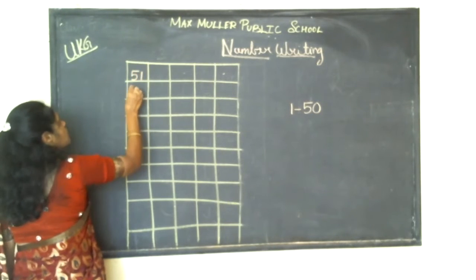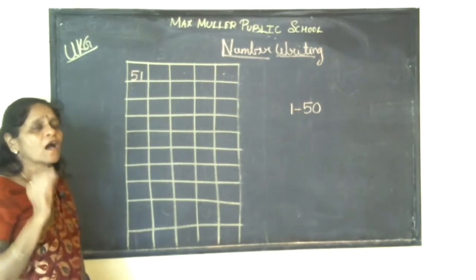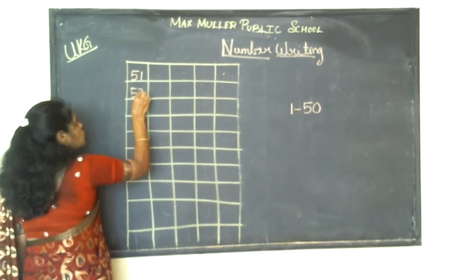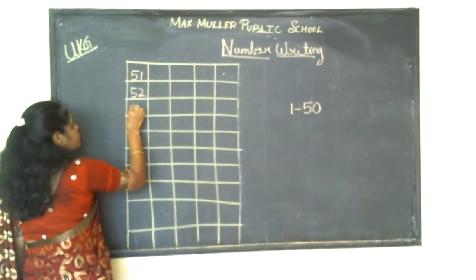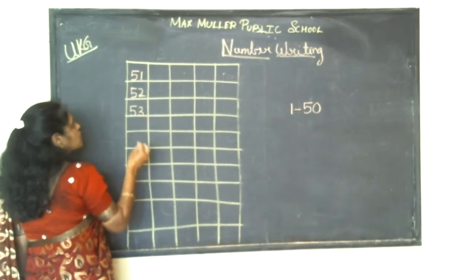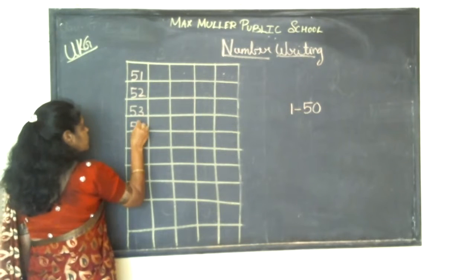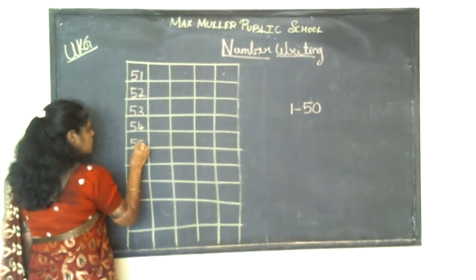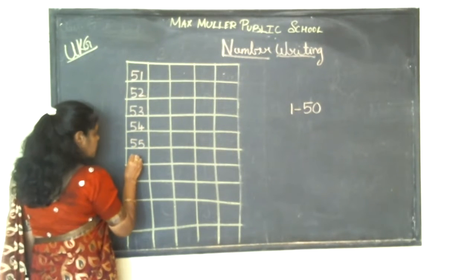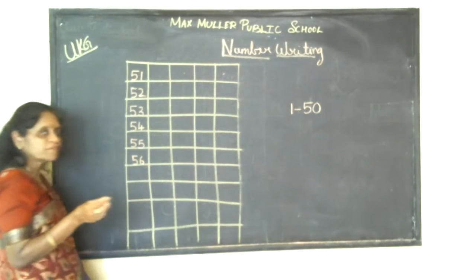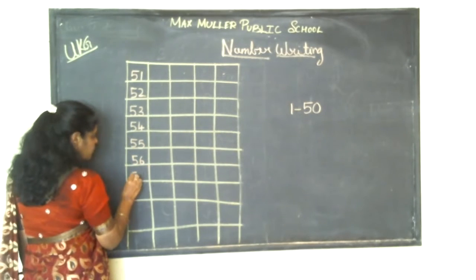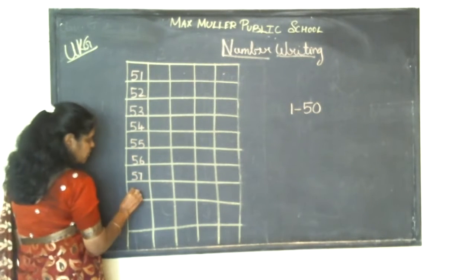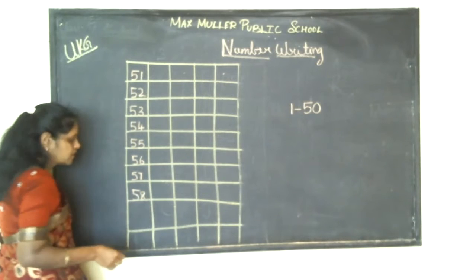51. You should always say and write. 5, 1 — 51. 5, 2 — 52. 5, 3 — 53. 5, 4 — 54. 5, 5 — 55. 5, 6 — 56. 5, 7 — 57. 5, 8 — 58.